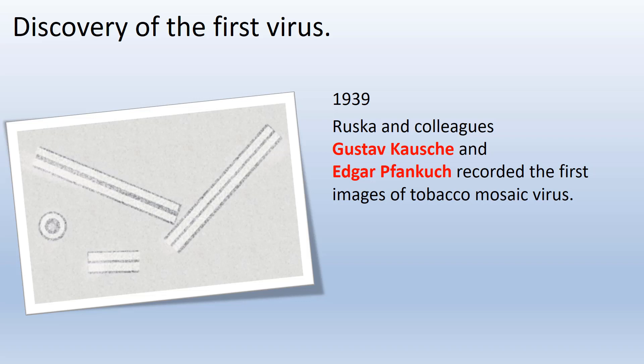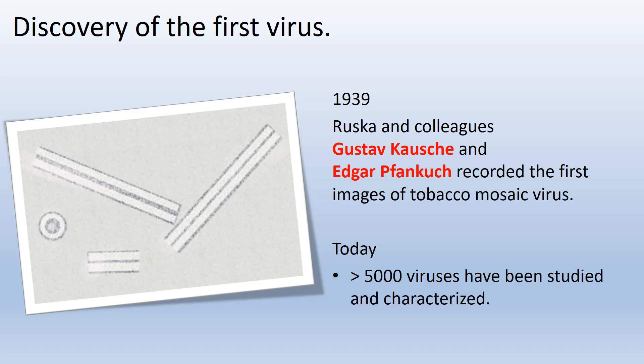And even with the invention, it took eight years for Ruska to publish the first images of the tobacco mosaic disease-causing agent, revealing it to be a long, thin, hollow cylinder-like virus that measured 18 nanometers wide by 300 nanometers long. Since then, the electron microscope has gone through many technological improvements and played a major role in the discovery of over 5,000 different virus particles.